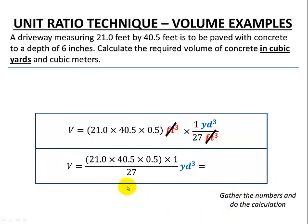Let's gather our numbers and do our calculation. So there's our length, width, and depth. There's the times the 1 and dividing by the 27 so that we are left with yards cubed. For our overall answer of 15.75 cubic yards to 2 decimal places.